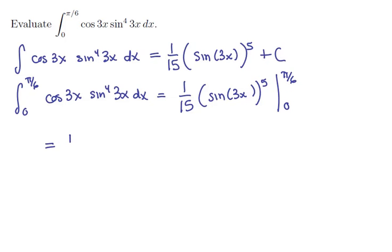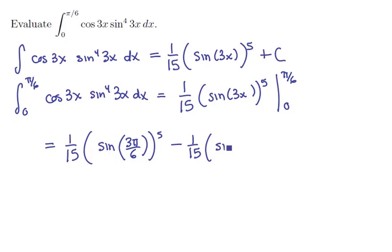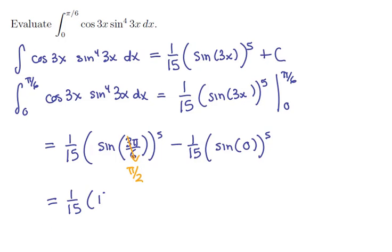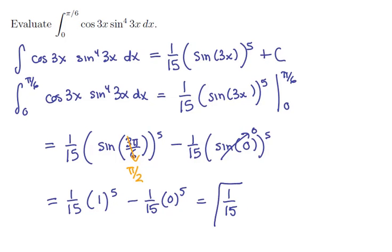First we plug in π/6: we get (1/15) times the sine of 3·(π/6) = sine of π/2, to the fifth power. Then we subtract what we get when we plug in 0: (1/15) times sine of 0 to the fifth. Since sine of π/2 = 1, this is (1/15)·1⁵. And sine of 0 = 0, so we subtract (1/15)·0⁵. The grand total is 1/15 — and that's the definite integral.